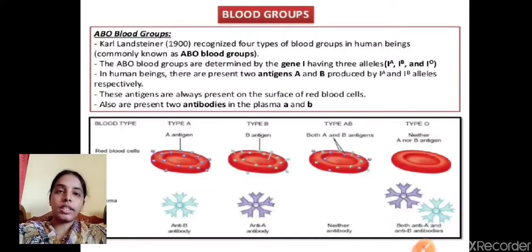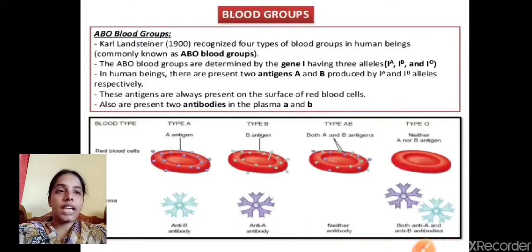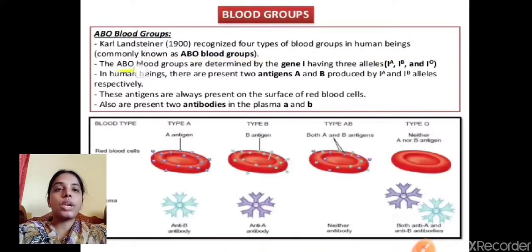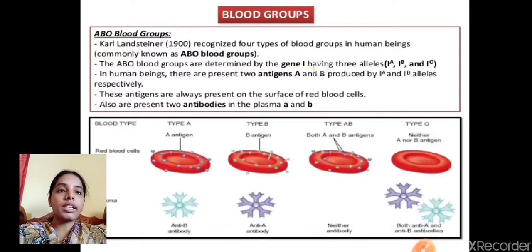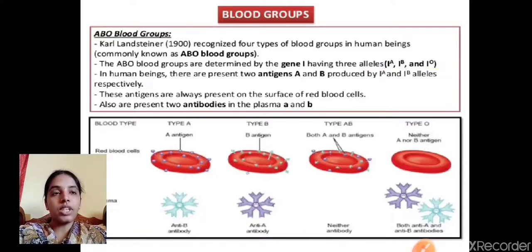Blood groups — the common blood groups are A, B, O, and AB. They were recognized and described by scientist Karl Landsteiner, who identified four types of blood groups in human beings, commonly called the ABO blood group system. ABO blood groups are determined by a gene called 'I' having three alleles: IA, IB, and IO. In human beings, there are two antigens — A and B — produced by IA and IB alleles respectively.